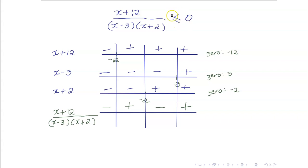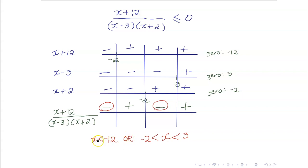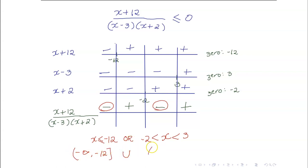We want the expression to be less than or equal to 0 — the negative intervals. These are x less than negative 12, and x between negative 2 and 3. Can x equal negative 12? Yes — it is a zero of the numerator. Can x equal negative 2 or 3? No — those are zeros of the denominator and would make the expression undefined. In interval notation, the solution set is negative infinity to negative 12 (closed), union the open interval (negative 2, 3).